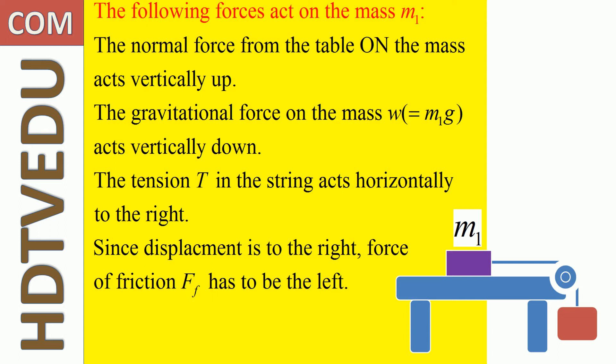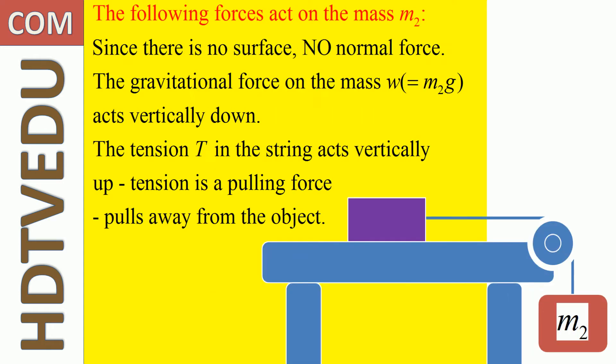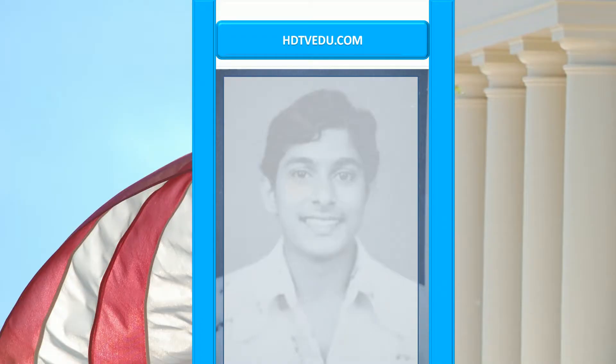Since the displacement of mass m1 is to the right, the force of friction Ff acts to the left. For mass m2, there is no surface, so there is no normal force. The gravitational force W = m2 × g acts vertically down, and the tension T in the string acts vertically up — because tension is a pulling force that pulls away from the object.